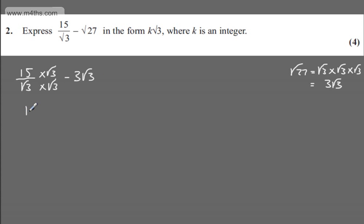So in the numerator, I'm going to have 15 root 3. Root 3 multiplied by root 3 is going to give me 3, and then we subtract away the 3 root 3. 15 over 3 is 5, so we have 5 root 3 minus 3 root 3, and that's going to give me 2 root 3. So we can see the value of k is going to be 2.